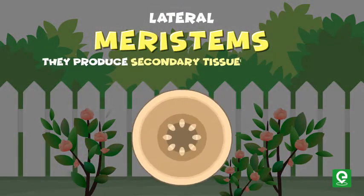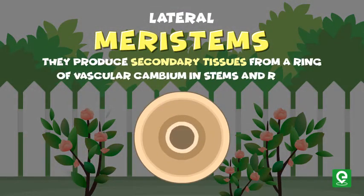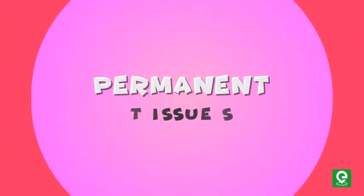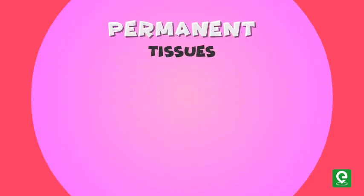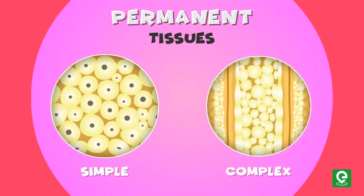Lateral meristems produce secondary tissues such as vascular cambium in stems and roots. Permanent tissues do not generally divide further, and they are of two types: simple tissue and complex tissue.